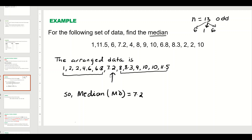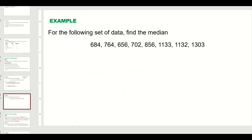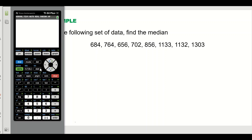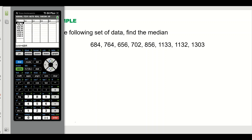Now let's look at another example where the number of observations is even. For the following set of data, find the median. There are eight observations given, but the data is not in ascending or descending order. So we go to our TI-84 calculator, go to STAT, then EDIT, and in List 1 enter the data — for example, 684, 764, and so on.